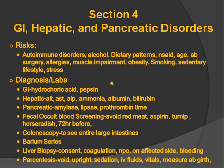Diagnostics and labs for this: specific for GI is hydrochloric acid and pepsin. Specific for hepatic, which is the liver, you have ALT, AST, ALP, ammonia, albumin, and bilirubin. Specific for pancreatic, you have amylase, lipase, and prothrombin. You have to realize that ALT and AST are talking about the liver, not the kidney.